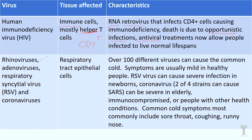Common cold viruses include rhinoviruses, adenoviruses, respiratory syncytial virus, and coronaviruses — these all cause varying degrees of the common cold. Some coronavirus varieties cause runny nose and sneezing like rhinoviruses, but there are a couple of coronaviruses, like COVID, that can cause SARS — severe acute respiratory syndrome. Respiratory syncytial virus can be dangerous for newborns. All of these viruses infect respiratory tract epithelial cells and bind to specific receptors. There are at least a hundred circulating all the time, and symptoms range from mild to severe depending on the immune system of the person being infected.